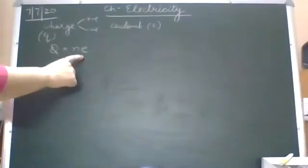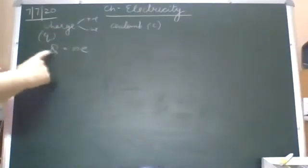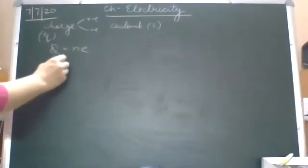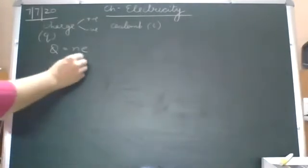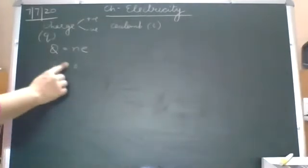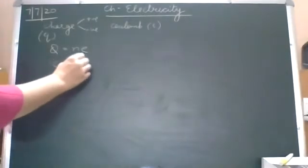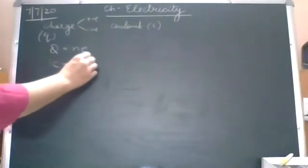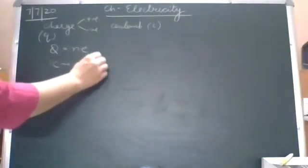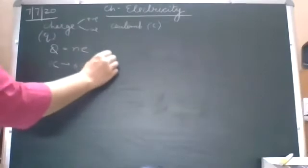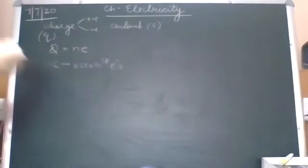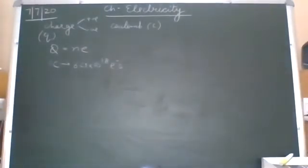Q is equal to ne. Based on this, we have done a numerical on how many electrons are in one coulomb charge. We have calculated that in one coulomb charge there are 6.25 × 10^18 electrons. This numerical we had done in both the sections.